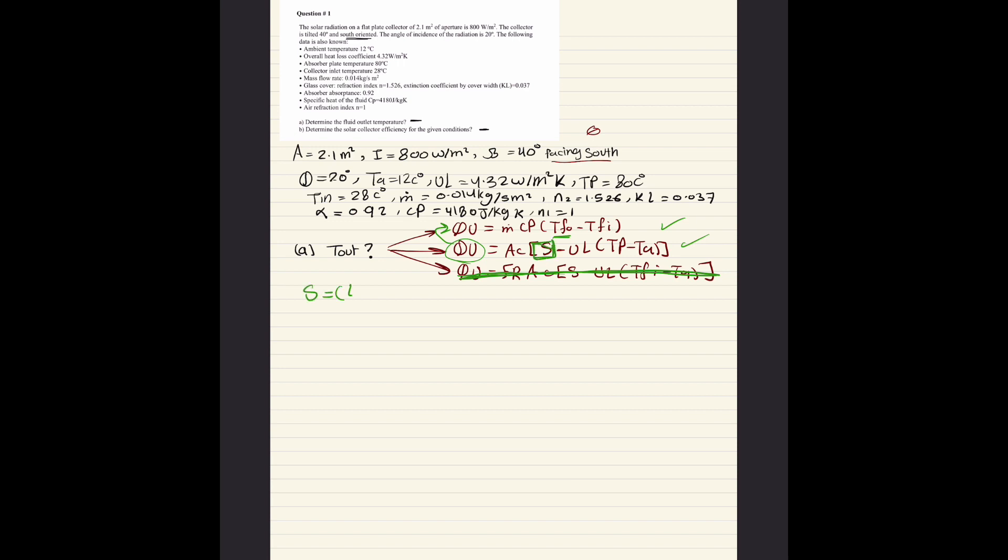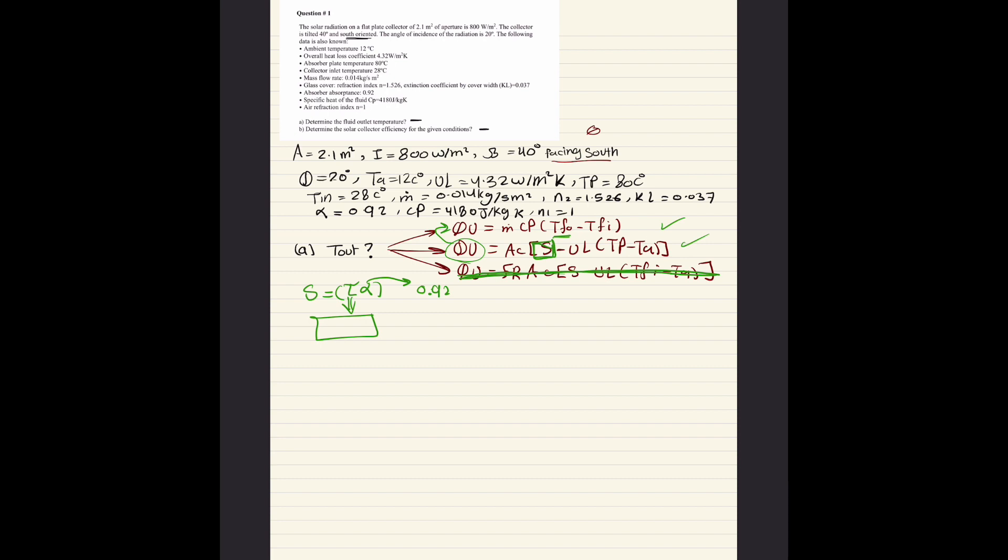To get S, S is tau times alpha. Alpha is already given in the question as 0.92. To get tau we need to solve in a bit complicated way. Tau is actually equal to tau A times tau R. Tau A is equal to e to the power of negative KL over cosine theta 2. Tau R is equal to 1 minus R parallel over 1 plus R parallel plus 1 minus R perpendicular over 1 plus R perpendicular.